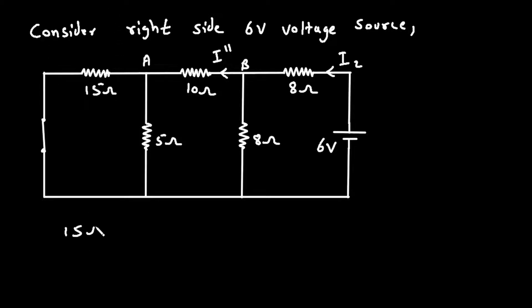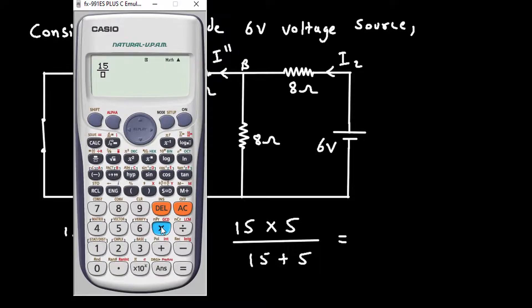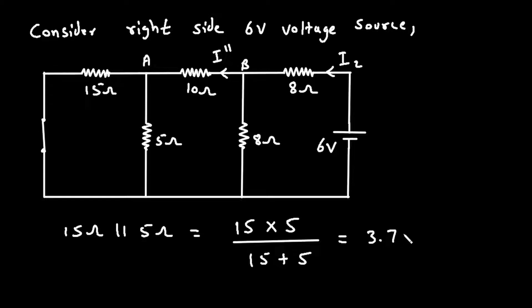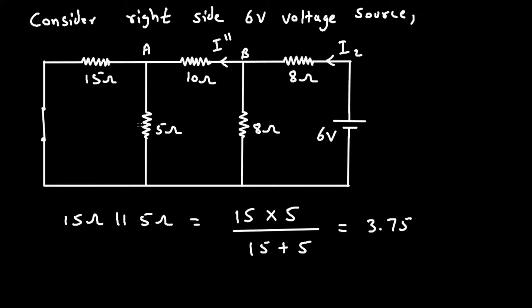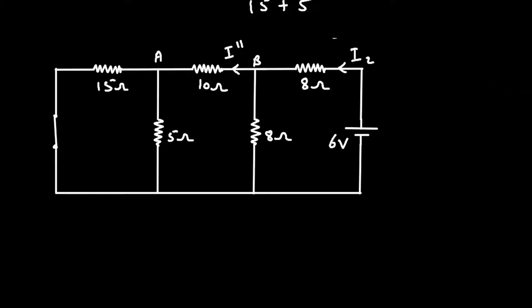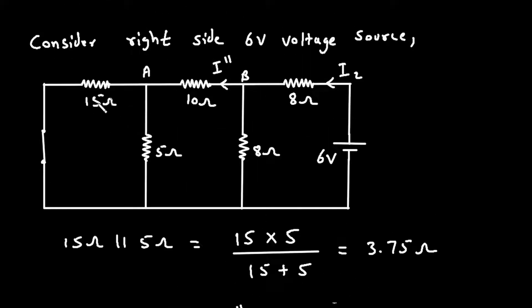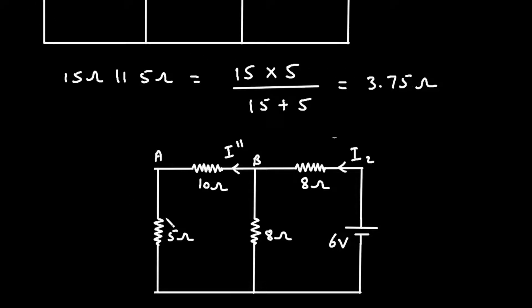15Ω parallel with 5Ω equals 15 × 5 divided by 15 + 5, which equals 3.75Ω. We replace these two resistances by a single resistance of 3.75Ω.